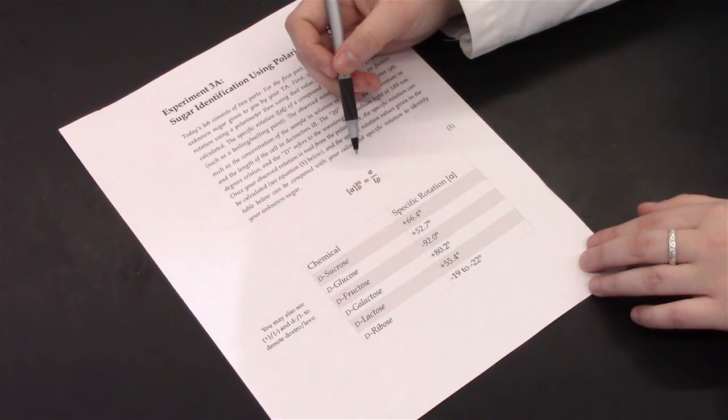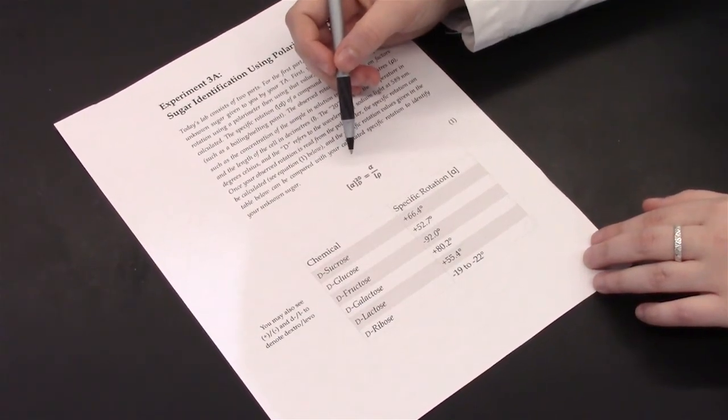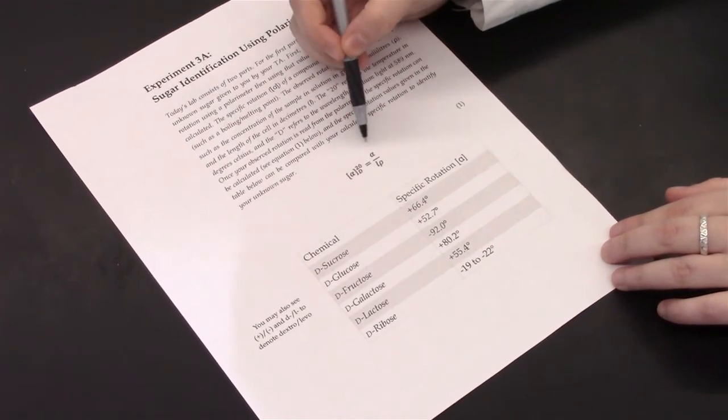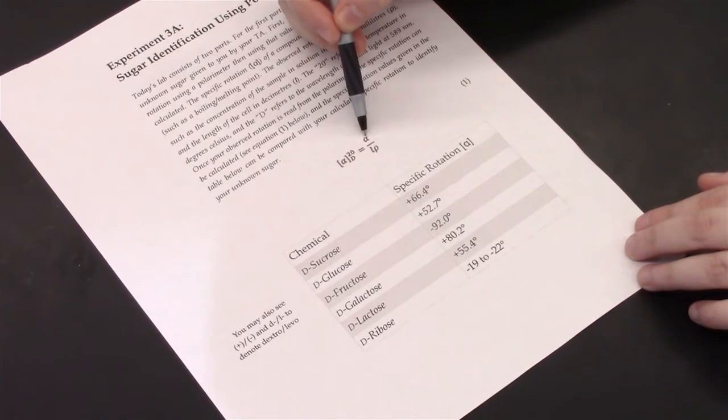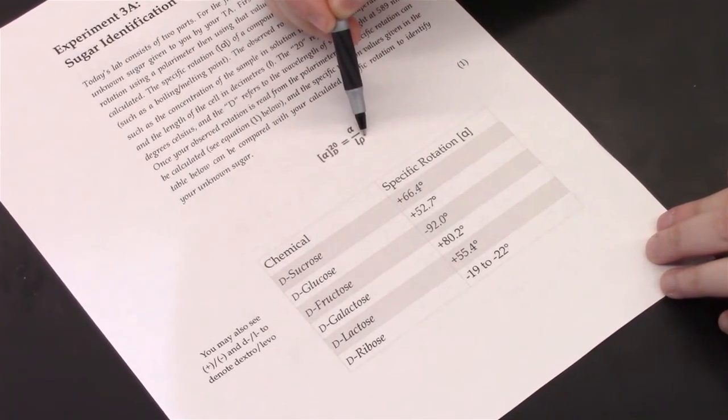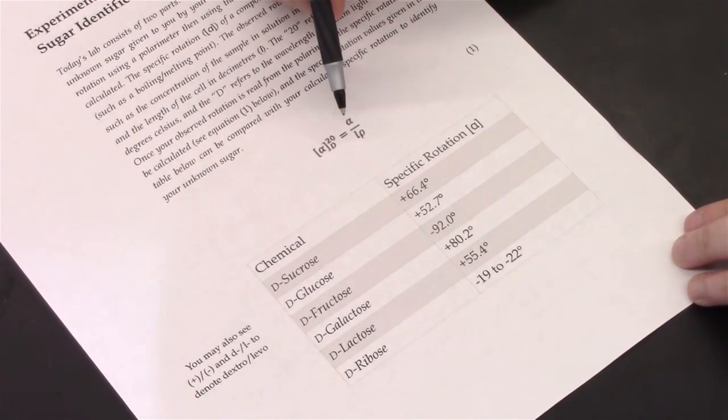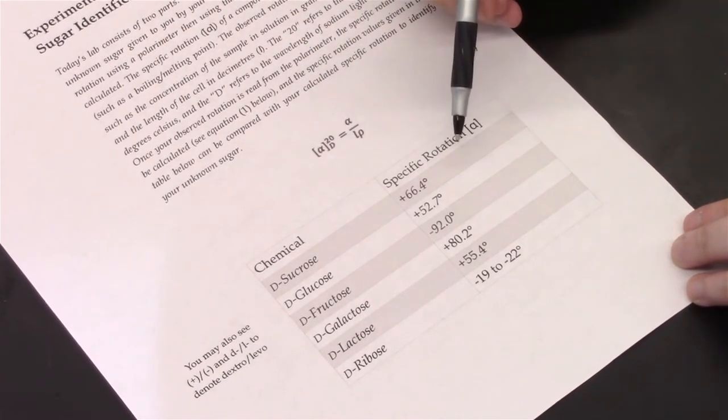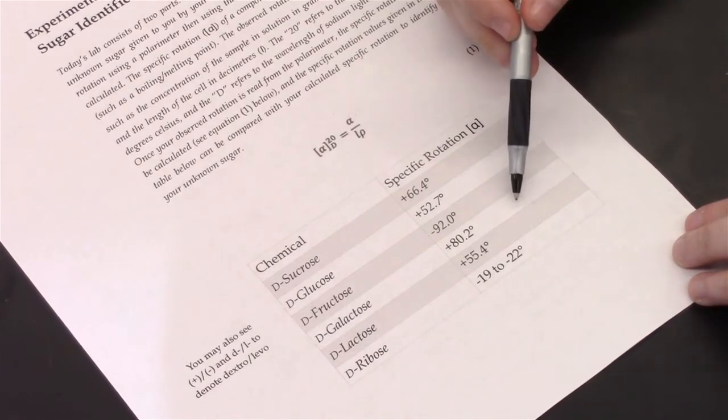When you find your observed optical rotation value, you are able to solve for the specific rotation using equation 1. Divide this observed optical rotation value by the concentration of your solution and the length of the tube. This final optical rotation reading can be used and compared to known literature values to determine what the compound at hand is.